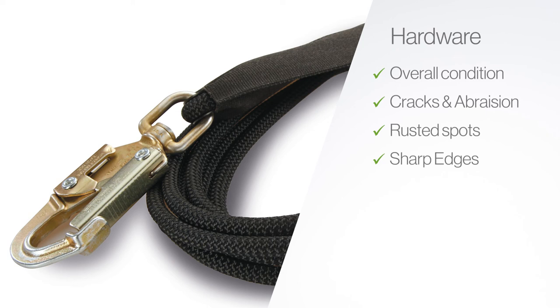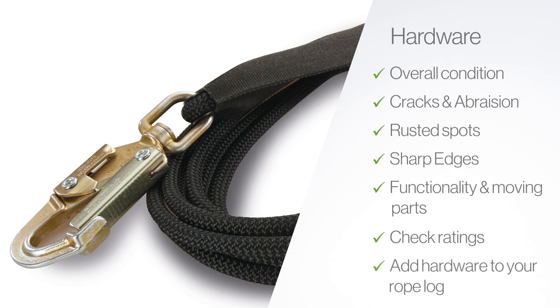You want to check those for functionality if they have moving parts like a snap hook would for example. You want to make sure that snap hook is functioning properly and then you want to check those pieces of hardware for any ratings. If it is for example a snap hook it will have a rating on it. You need to make sure that that rating matches up with the task you're about to do with that rope similar to when you checked the label at the beginning of your rope inspection. You also want to note any findings on the hardware inspection into your rope log because with that piece of hardware being permanently attached to that rope it is part of the system and should be inspected as a whole.